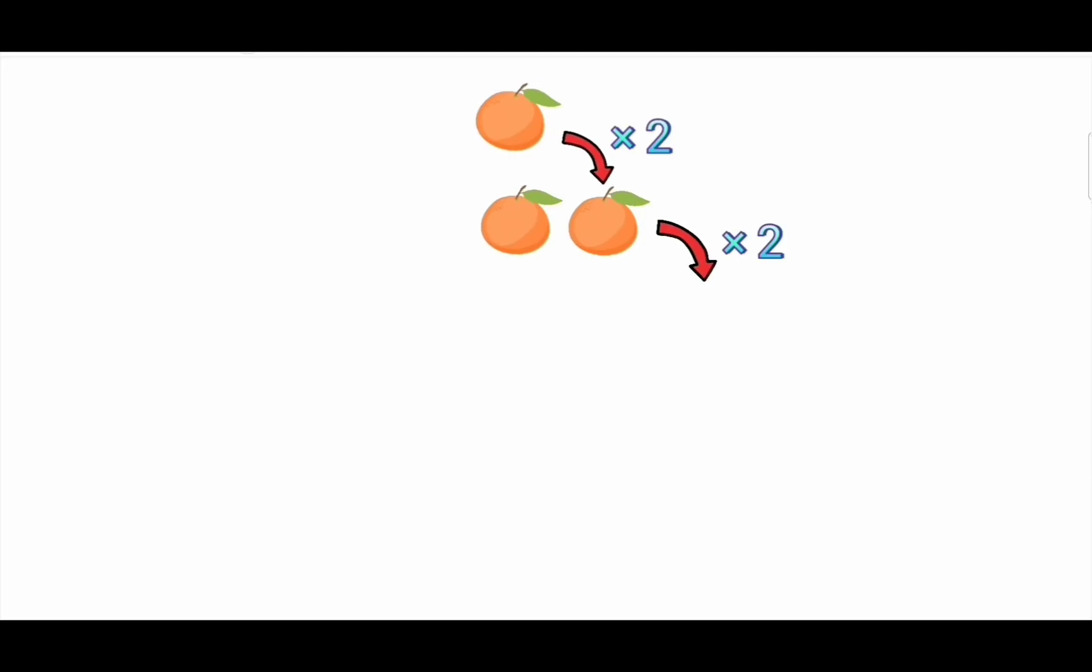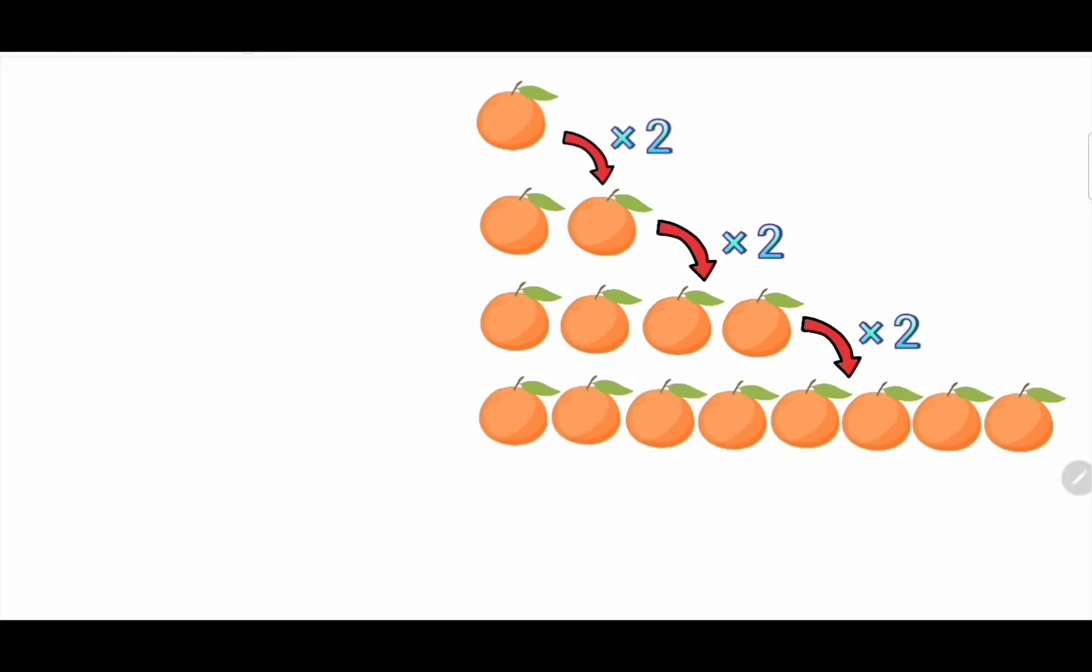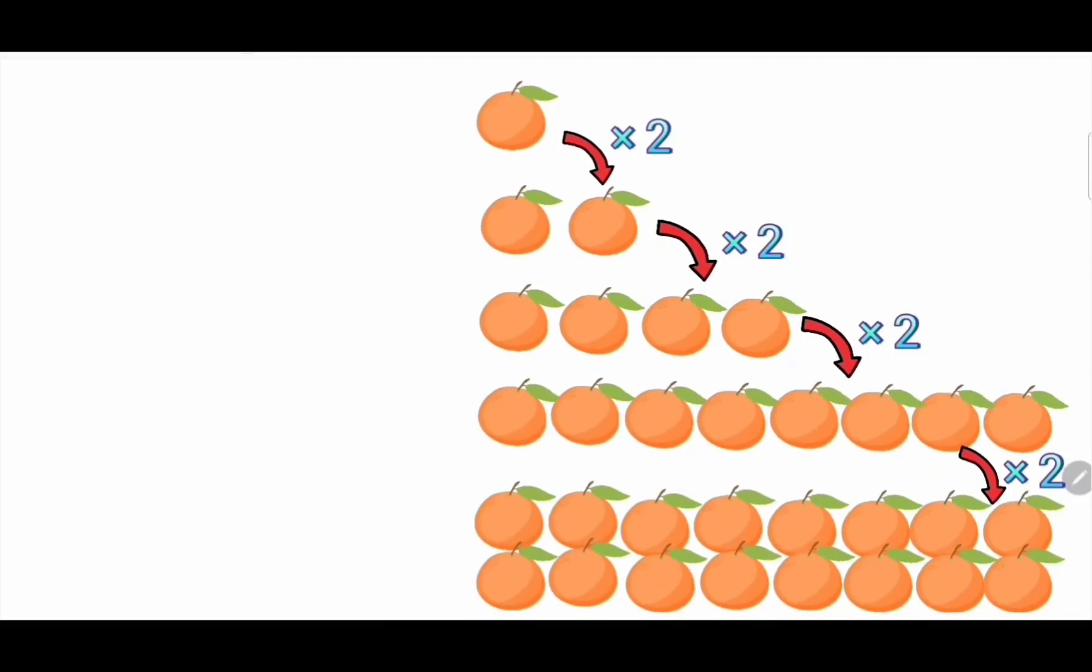Then double the number of oranges you have right now, you will get 4 oranges. Then you double that, you get 8. Further double that, you get 16 and so forth.